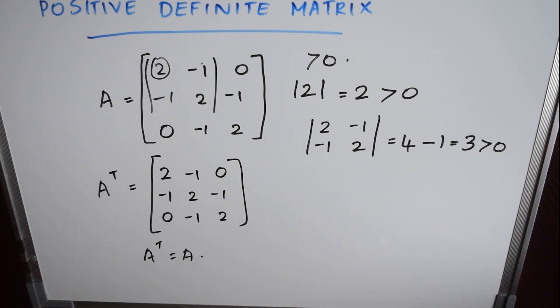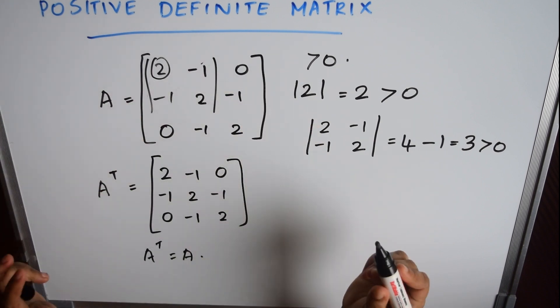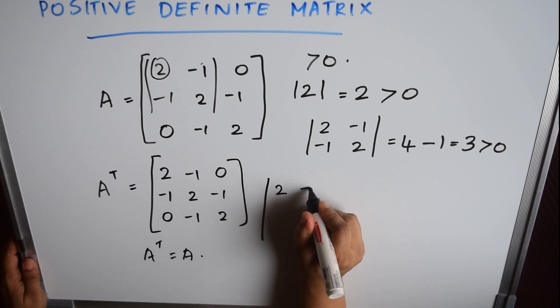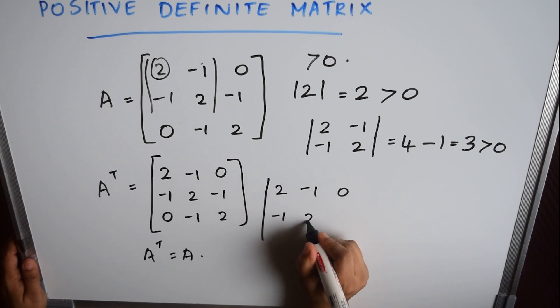Now consider the third upper left determinant, which is this whole matrix. So the determinant of this matrix will be the determinant of 2, -1, 0; -1, 2, -1; 0, -1, and 2.